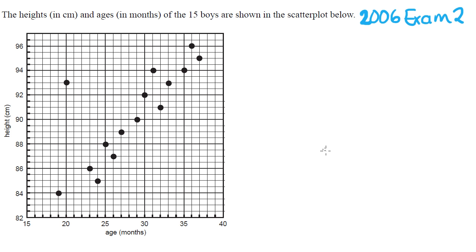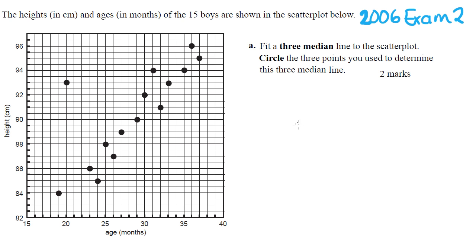Now what's the question asking us? Part A said: fit a three median line to the scatterplot. Circle the three points you used to determine this three median line. So they want to see that you can split these up into the right number of groups and that you can circle the median horizontally and vertically in those groups.